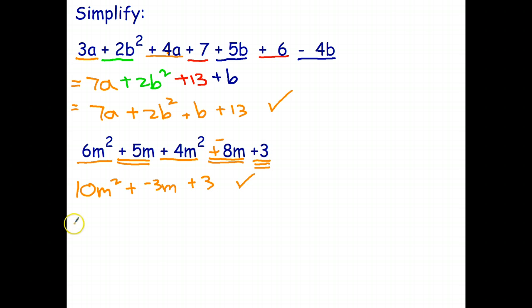So finally we write plus 3. So you can leave your answer like that. Or if you prefer not to have the plus negative, it's 10m squared, plus negative 3m is the same as take 3m plus 3. So the rule for adding and subtracting expressions is you can only add and subtract like terms.